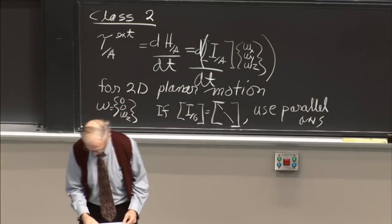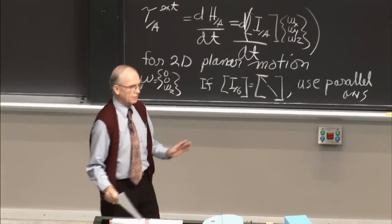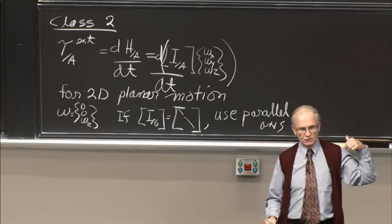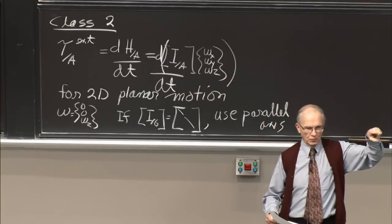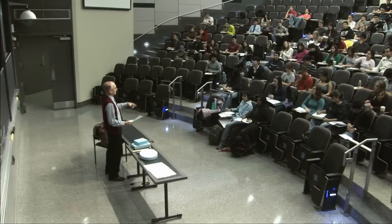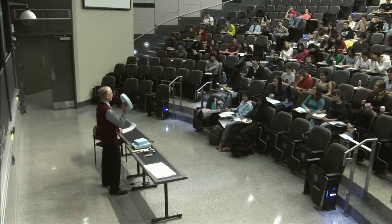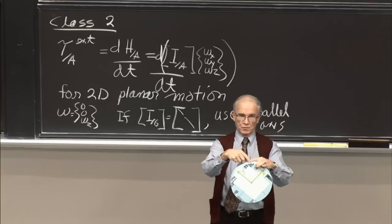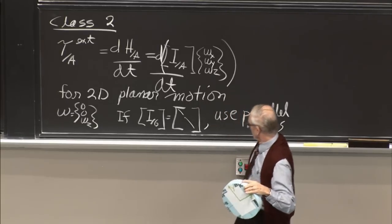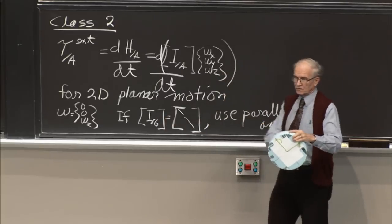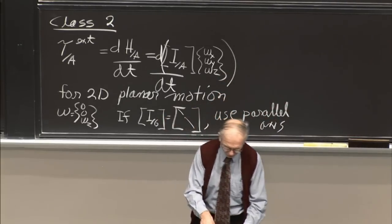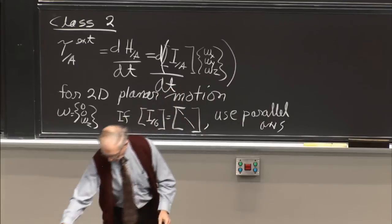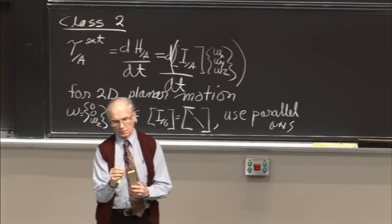We're going to do an example right now that's almost identical to that homework problem — basically the pendulum. We started it last time. Last time I derived an example of the parallel axis theorem for a stick. So here's G, here's the point I want it to rotate about — A. The distance between these two points is D, which will appear in the parallel axis theorem.